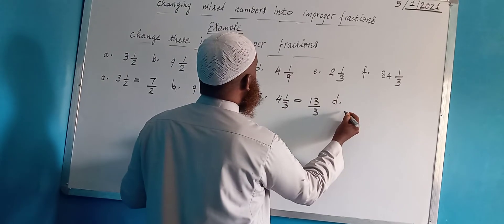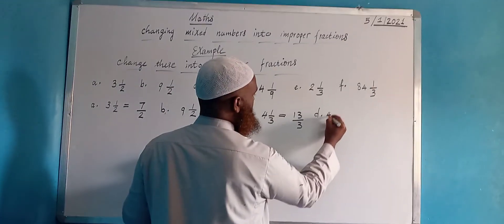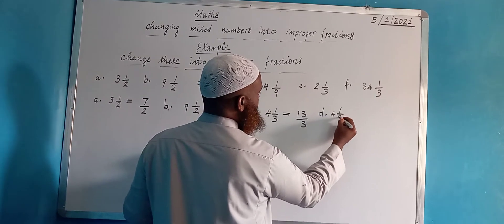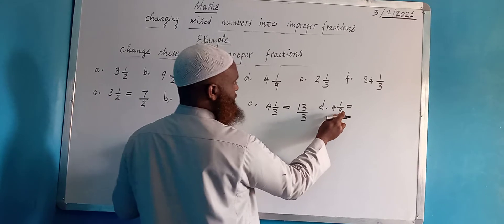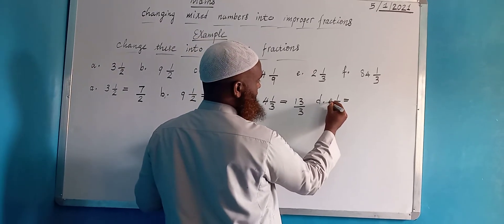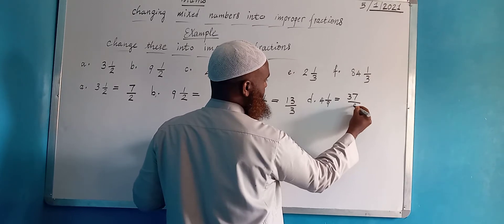4... 4 here, 1 divided by 9. Then we're gonna have to go 4 times 9 is 36, 36 plus 1 is 37, 37 divided by 9.